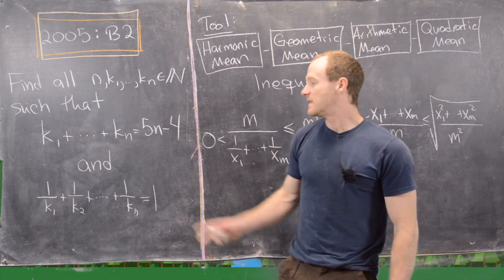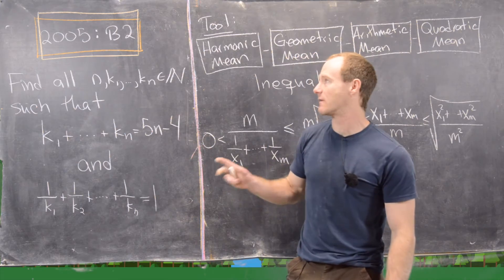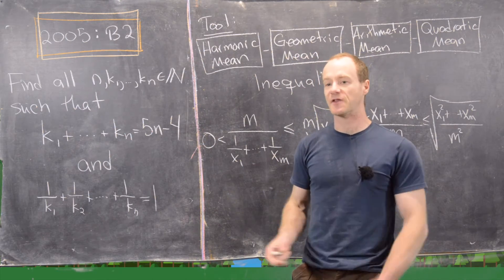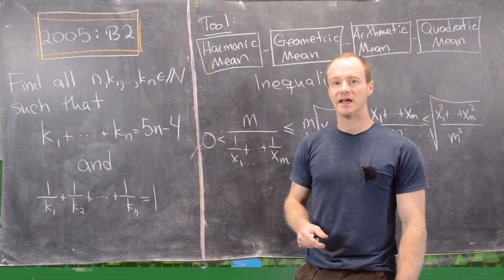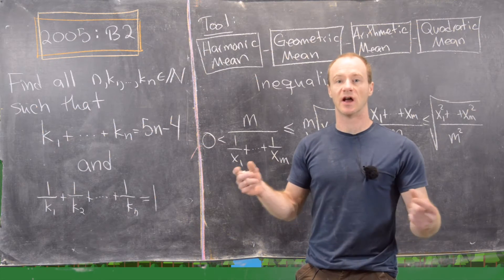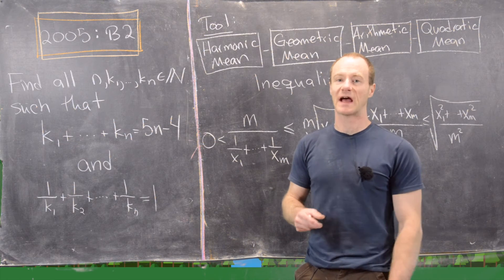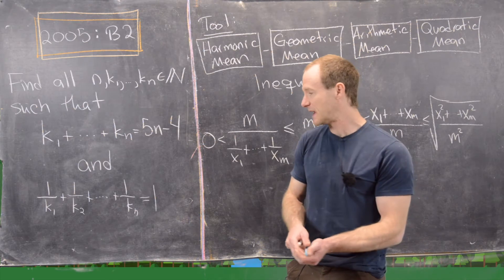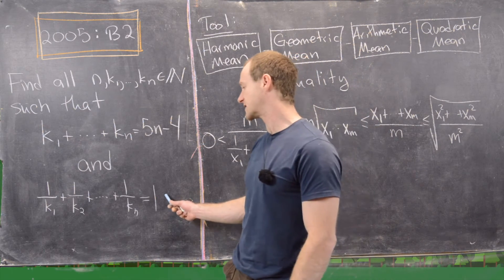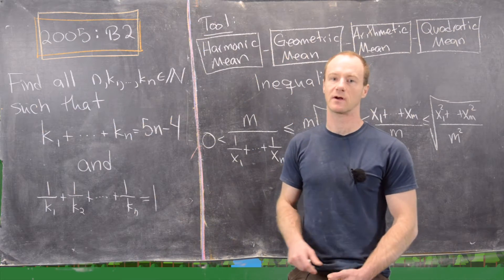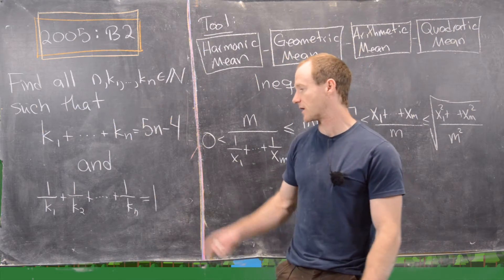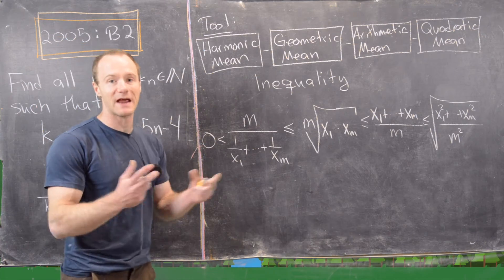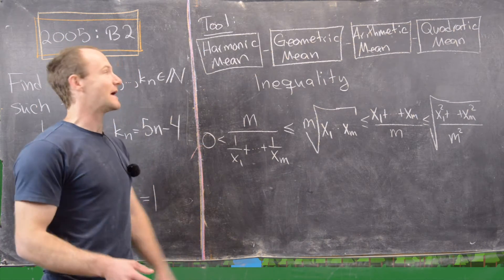This is actually quite an easy problem, but I think it was B2 instead of B1 because the thing that makes it easy is a certain inequality of types of means, one of which is kind of lesser known. The big hint is that we're taking the sum of the reciprocals of the numbers, and I want to introduce the inequality which will make this problem really manageable.